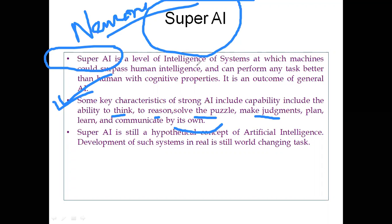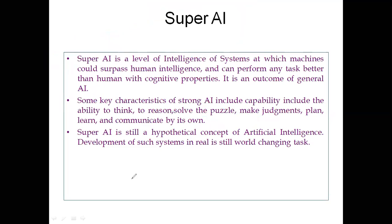Does any such Super AI system exist today? The answer is no. Since General AI — where machines are as intelligent as humans — is not yet available, how could we expect a machine that surpasses human intelligence? So Super AI is also under research, and if General AI comes into reality, then we can hope that Super AI will follow in the near future.